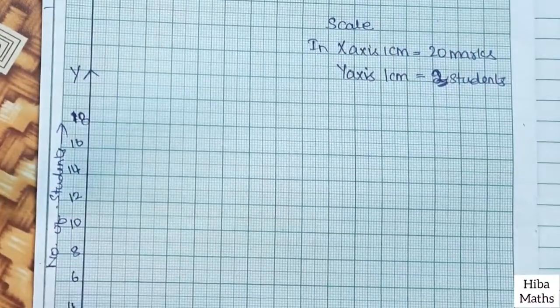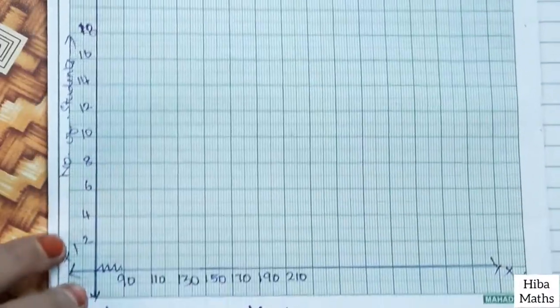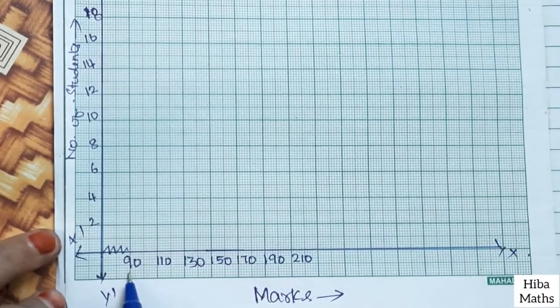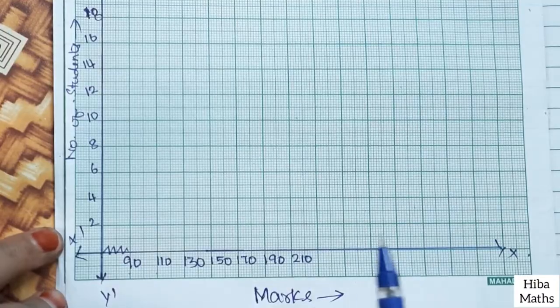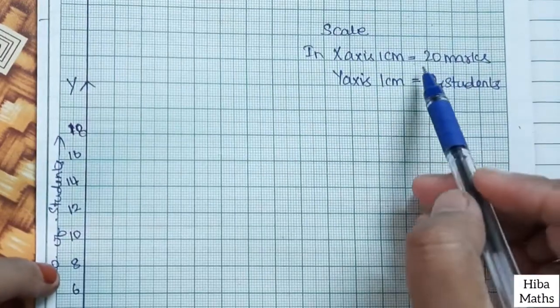Here we have to make sure we can do this on a graph sheet. Scale is 1 cm. 90 to 110, 100 to 110. 20 marks are 20.